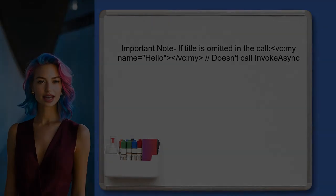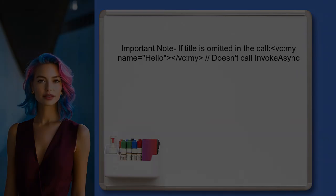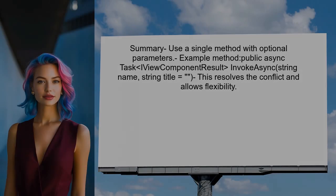However, it's important to note that if the user does not provide the title parameter, the method will not be invoked if the title is omitted in the call. In summary, the user can successfully use optional parameters in their view component by defining a single method.